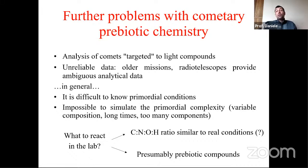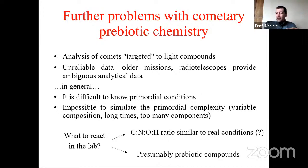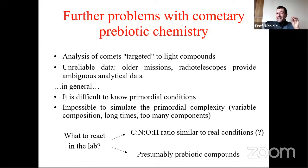All these studies, based on the Miller experiment and documentary simulation experiments, have additional problems. For example, the analyses were targeted to light compounds. Polymers completely escape this analysis and classification, because polymers are really difficult to analyze. We have random polymers called tholins, but these polymers have little to do with prebiotic chemistry. They are very difficult to analyze and classify, so we usually analyze only very light compounds.